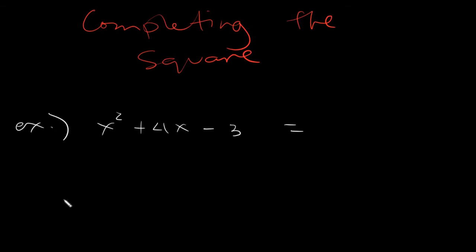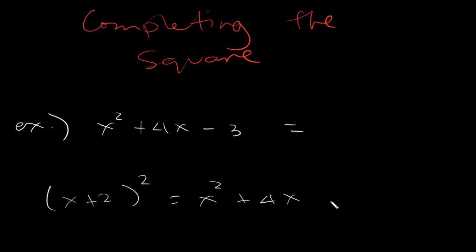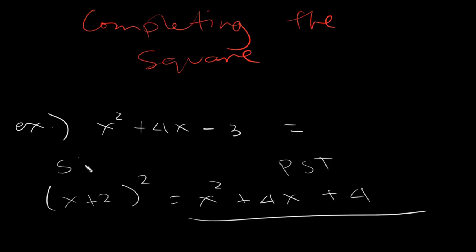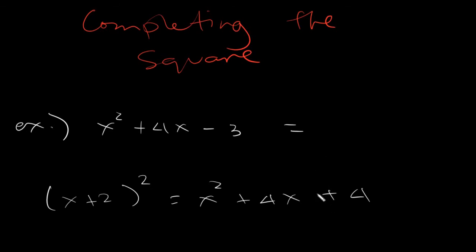A PST is simply the answer for any square of a binomial. For example, if you have x plus 2 squared, the answer is x squared plus 4x plus 4. So a PST and a square of binomial are partners. That is our aim for completing the square — we must make our given a PST.